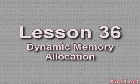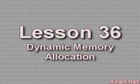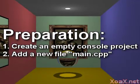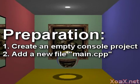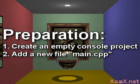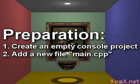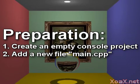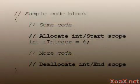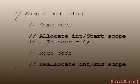Lesson 36: Dynamic Memory Allocation. To follow along with this lesson, you will need to create a new console project and add a new file named main.cpp to it, as we did in lesson 1. All of our variables up to this point have been allocated and deallocated automatically by the compiler with adherence to the notion of scope. In this lesson, we will discuss how to control the allocation and deallocation of variables manually.